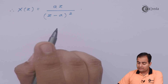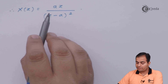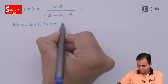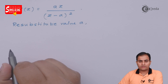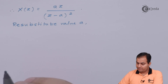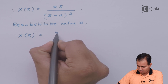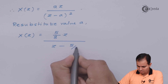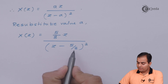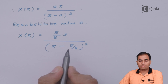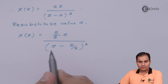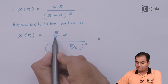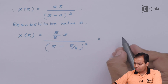This is our result, but we need to resubstitute the value of a. The value of a is 5/8. Shifting the 8 to the denominator side gives us the expression with a = 5/8 substituted in.